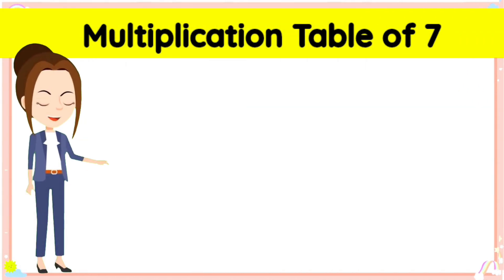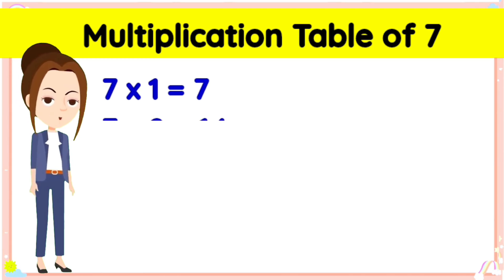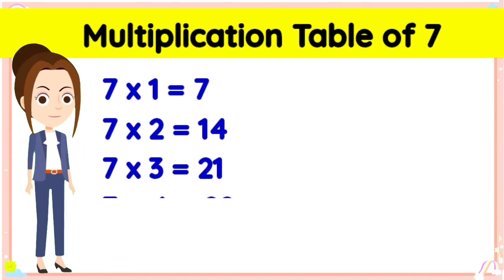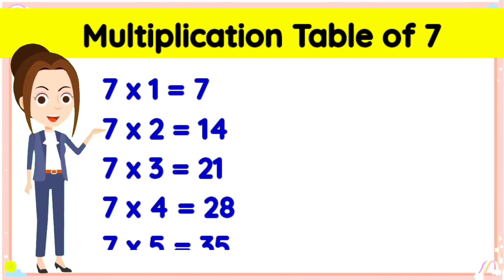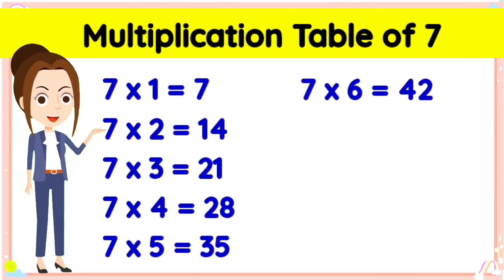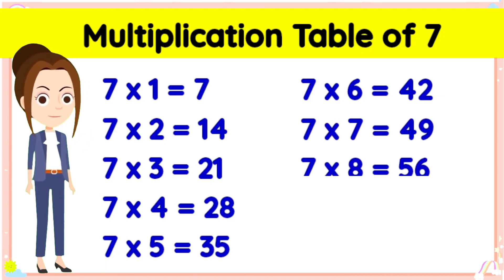Children, come let's recapitulate the multiplication table of seven that we learned. Seven ones is seven. Seven twos are fourteen. Seven threes are twenty-one. Seven fours are twenty-eight. Seven fives are thirty-five. Seven sixes are forty-two. Seven sevens are forty-nine.